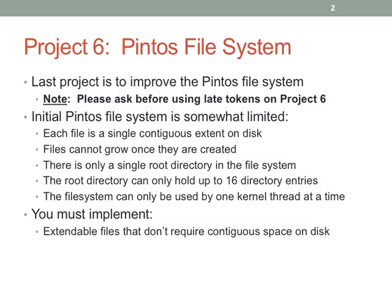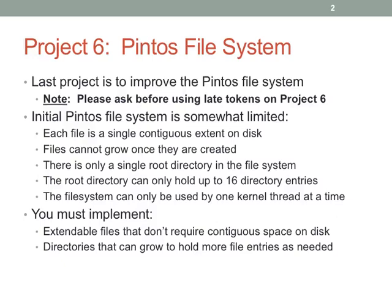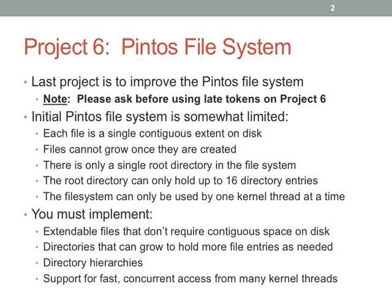Implementation requirements: extendable files that don't require continuous space. The requirement is some kind of multi-level indexed allocation, so files are no longer required to be contiguous on disk. Directories that can grow to hold more file entries as needed — no longer limited to 16 entries. Hierarchies of directories containing directories. And then the hard part is fast concurrent access from many kernel threads, which is probably the most challenging bit. Once you get that nailed down, everything else is kind of tedious — file system data structures are not forgiving. But everything else is pretty straightforward once concurrent access is done.